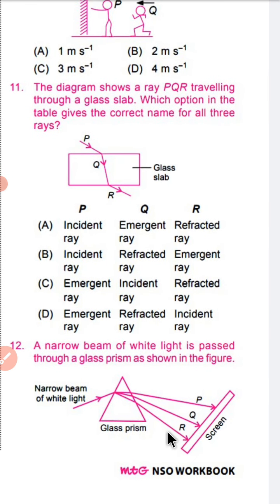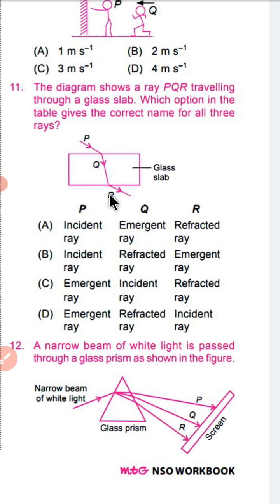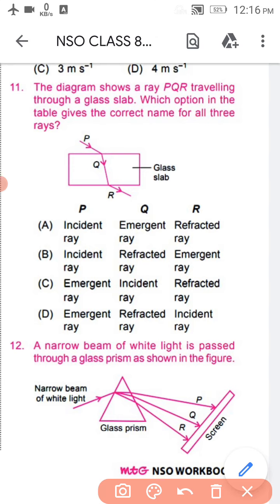Look at question 11. The diagram shows a ray PQR traveling through a glass slab. Which option gives the correct name for all three rays? P to Q is the incident ray. When a ray of light is incident, R to Q is the emergent ray, and Q to R is the refracted ray. So P to Q is the incident ray, Q to R is the refracted ray, and R to Q is the emergent ray.